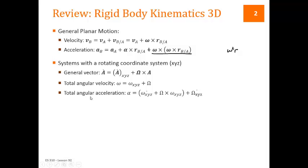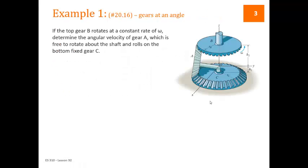The total angular acceleration comes from applying the time derivative of a general vector to each component of the omega equation. We have the time derivative of omega in the moving coordinate system, plus the omega of the moving coordinate system crossed with omega in the moving coordinate system, plus the time derivative of the angular velocity of the moving coordinate system. Today we're going to look at examples that don't use rotating coordinate systems — instead we'll focus on the general planar equations.